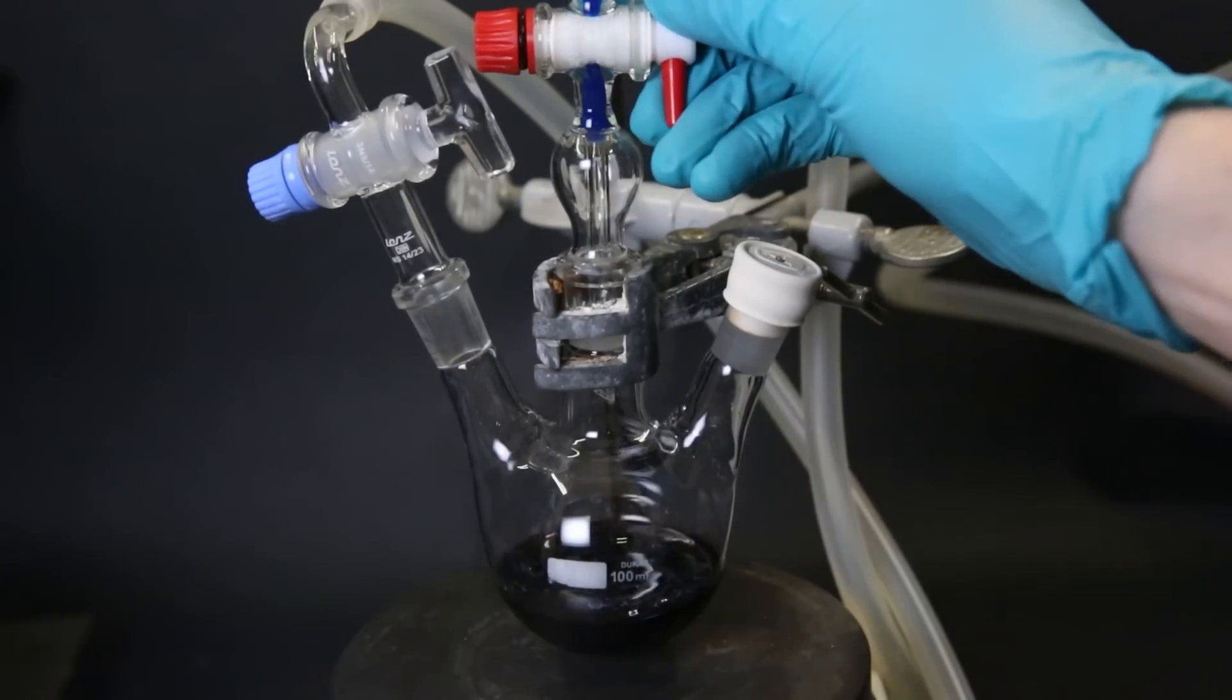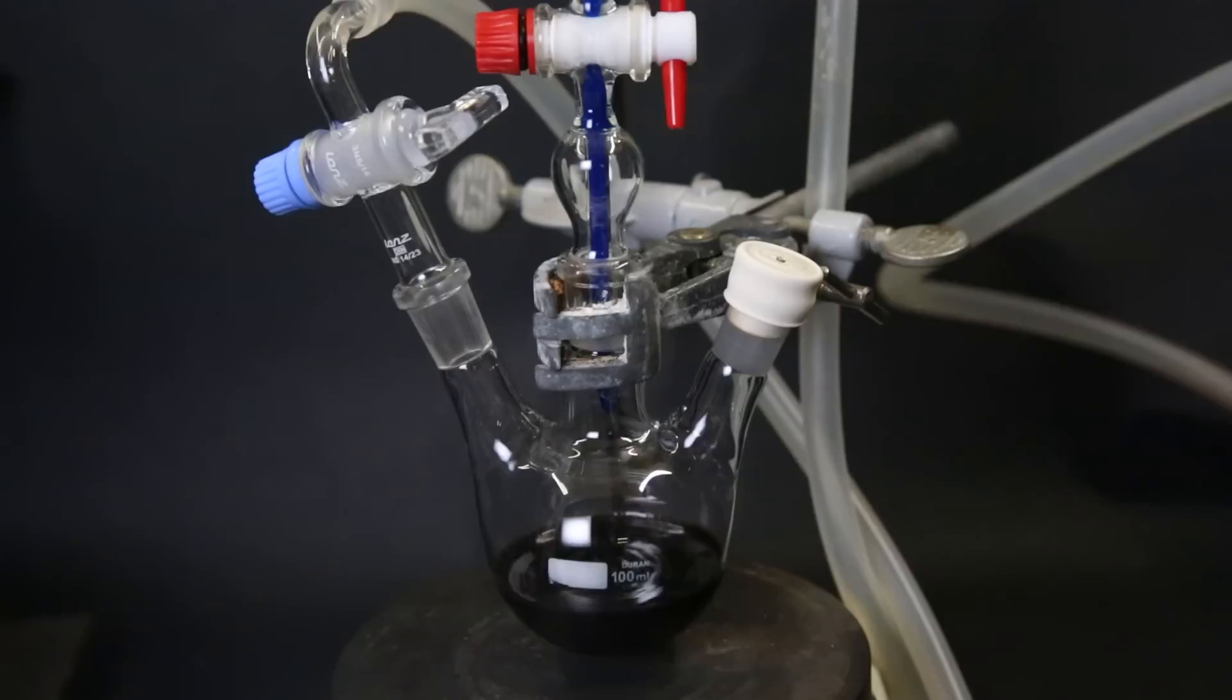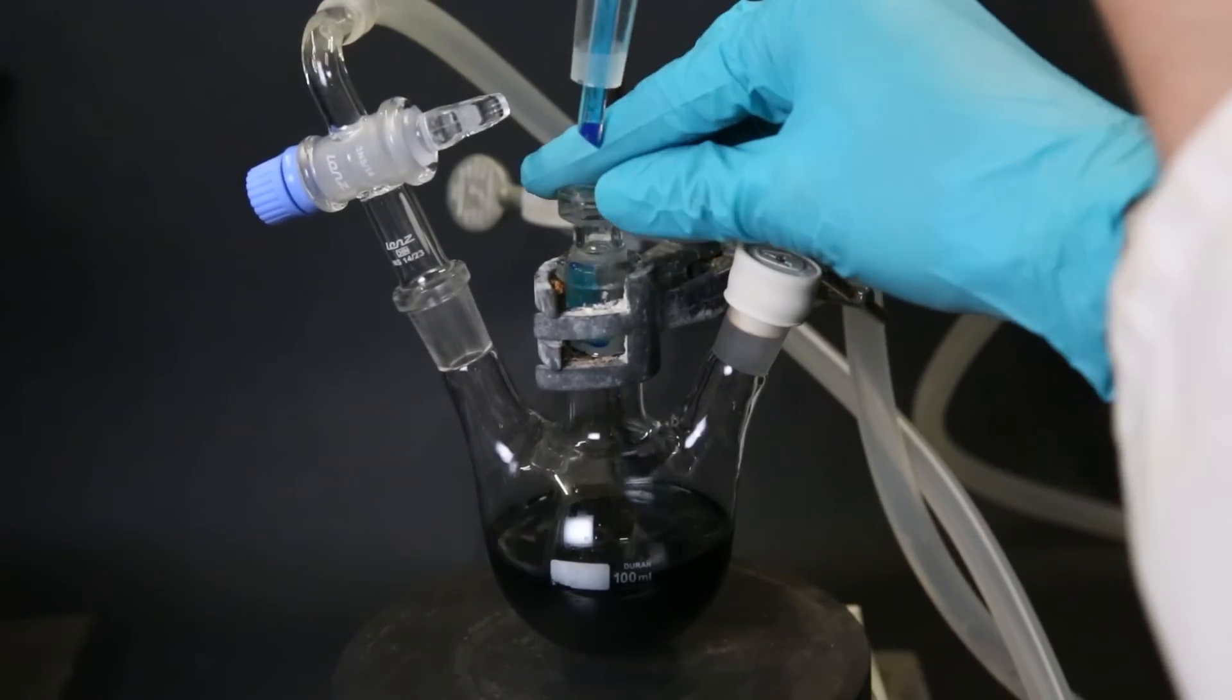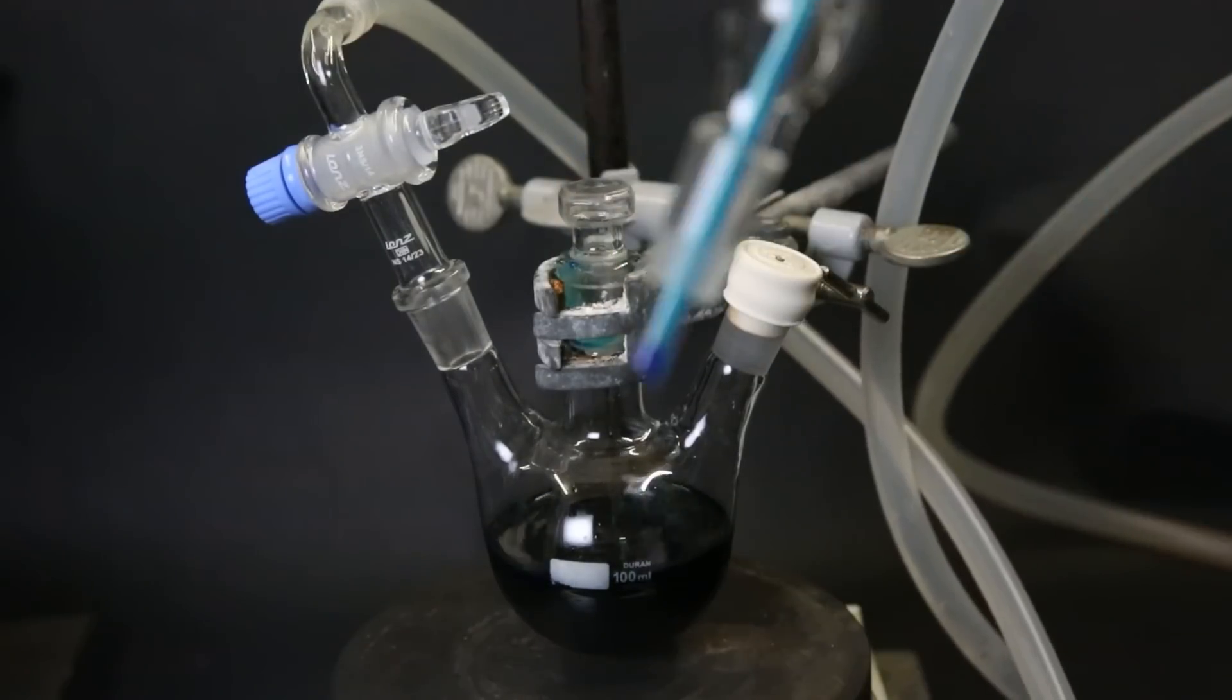Then under constant argon flow, I slowly add the cobalt(II) chloride solution to the sodium cyclopentadienide solution. During this reaction, we are producing the cobaltocene, which should be a dark purple. But because the solution is already dark, it is impossible to see if anything is produced. When everything is added, I quickly remove the dropping funnel and put a stopper in its place. I then leave it to stir overnight.